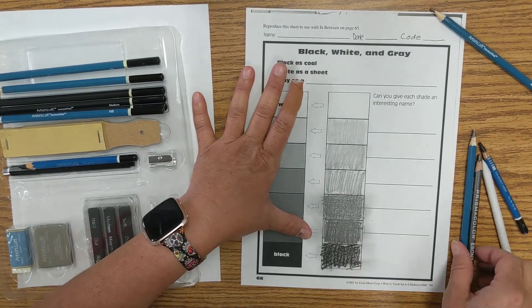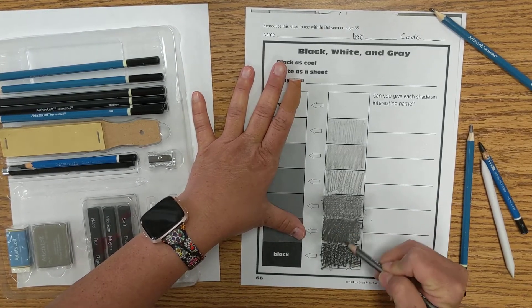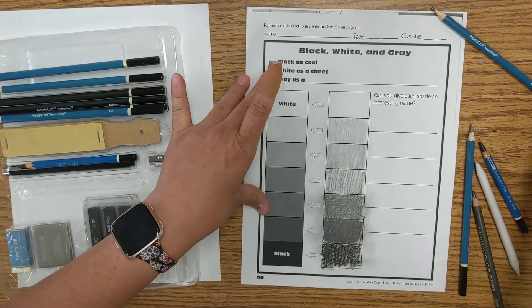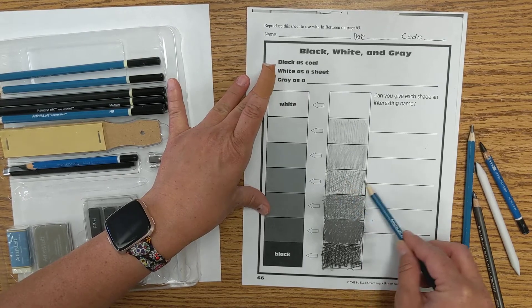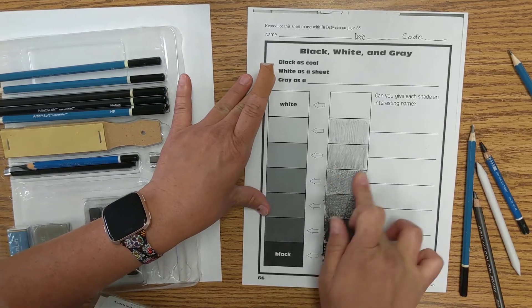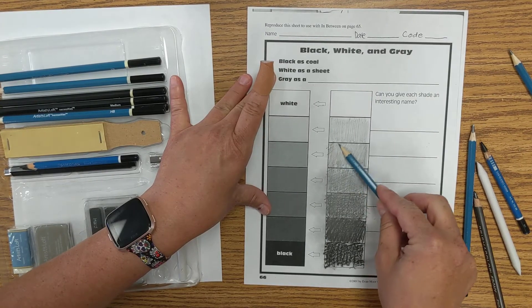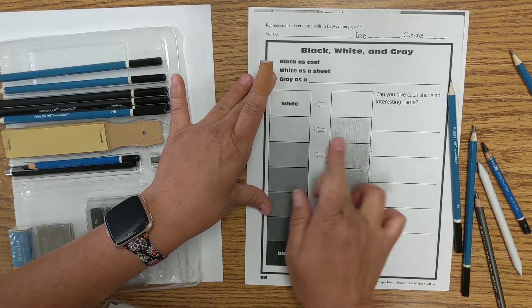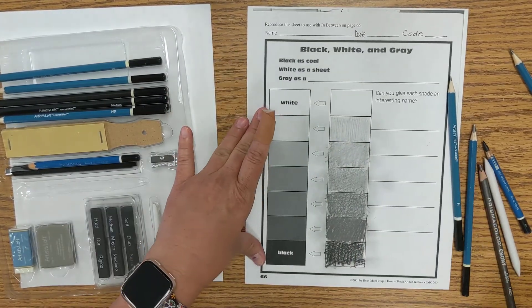Now if one's looking lighter than the other or darker than the other, then I might have to go back in there. I'm liking that better, yeah. And then this one's going to be a little bit lighter. I prefer using my finger. And there I have it.